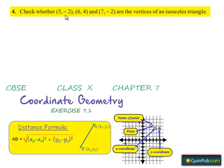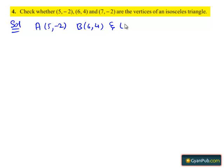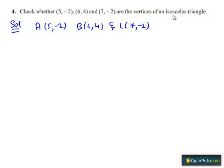Coming to the fourth question, check whether 5 comma minus 2, 6 comma 4, and 7 comma minus 2 are the vertices of an isosceles triangle. Let the given points be A(5, −2), B(6, 4), and C(7, −2), which are the vertices of triangle ABC. In this problem, we need to check whether the points A, B, and C are the vertices of an isosceles triangle.